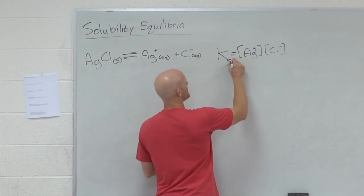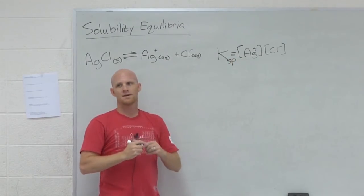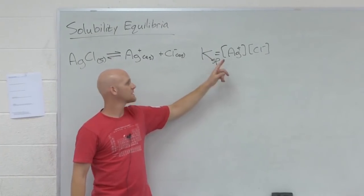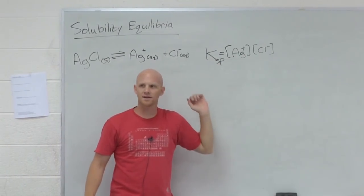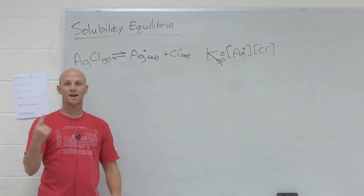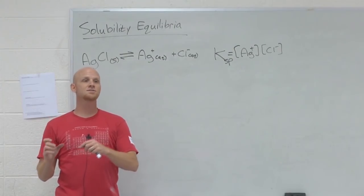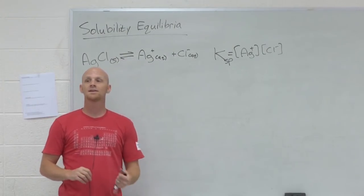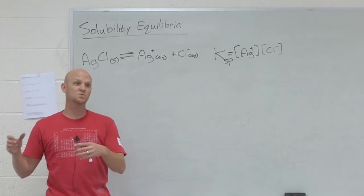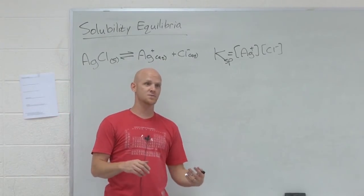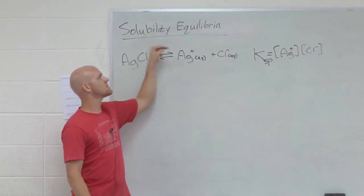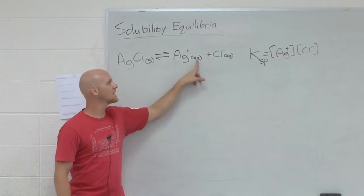And they call these Ksp. And the sp here stands for solubility product. They call it product because you're only multiplying, not dividing. So that's indicative of Ksp. So if you look here, we talked about Ka's and they were for weak acids dissociating into ions in water. Kb was for weak bases dissociating into ions in water. We even talked about Kw, which was water dissociating into ions in water.